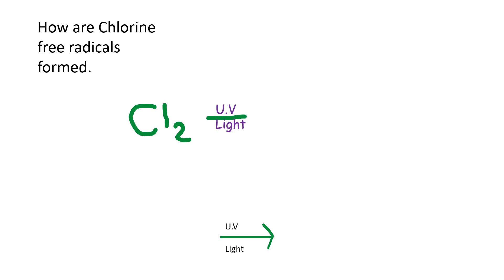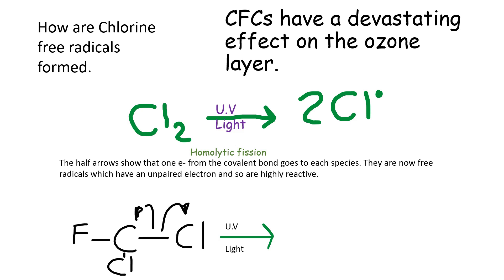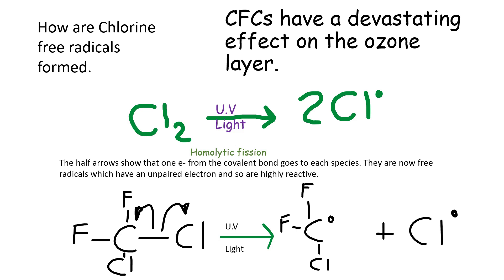Here we have a chlorine molecule. When UV light hits it, the bond can be broken by homolytic fission, in which one unpaired electron goes to each of the chlorine atoms, forming two chlorine free radicals. Down below, we can see a chlorofluorocarbon being turned into two free radicals as well. The carbon-chlorine bond is the weakness — the UV light absorbed into that bond splits it into two free radicals. These half arrows show the movement of an unpaired electron. Free radicals are highly reactive, and it's this fact that damages the ozone layer.